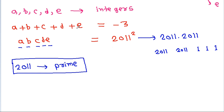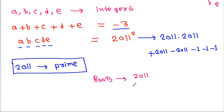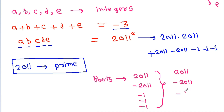And we have the sum of a, b, c, d, e is -3. Since -3 is very small in comparison to 2011, one 2011 will be positive and the second 2011 will be negative. And to make the sum of a, b, c, d, e negative, the roots will be 2011, -2011, -1, -1, -1.